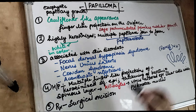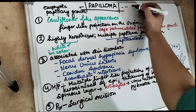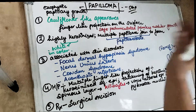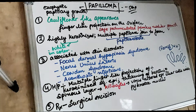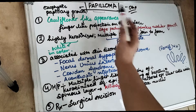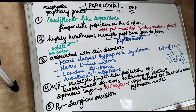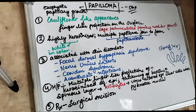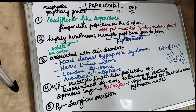As the name suggests — 'oma' means it is a benign neoplasm. And 'papilla' — so there is going to be a kind of papillary growth in a benign neoplasm.